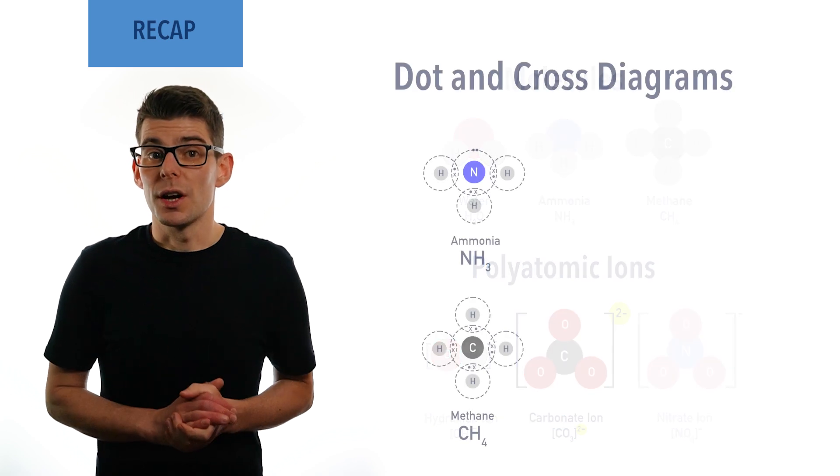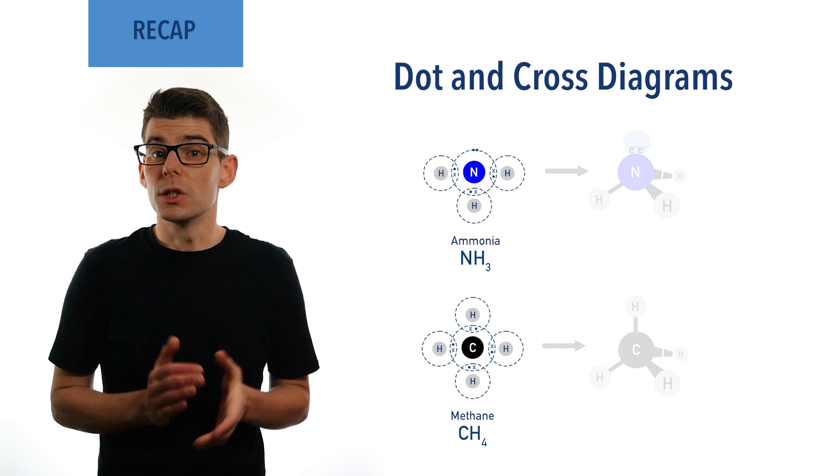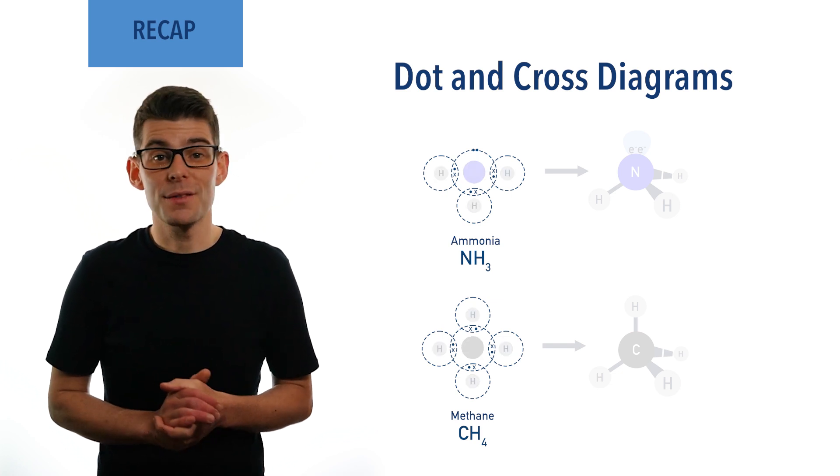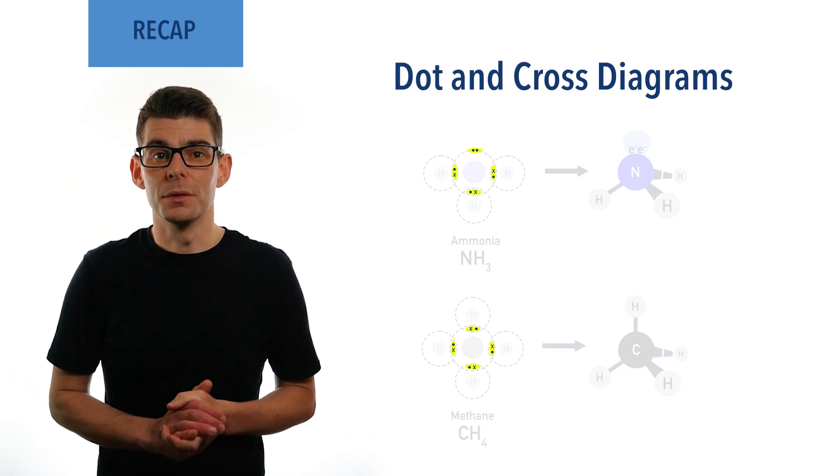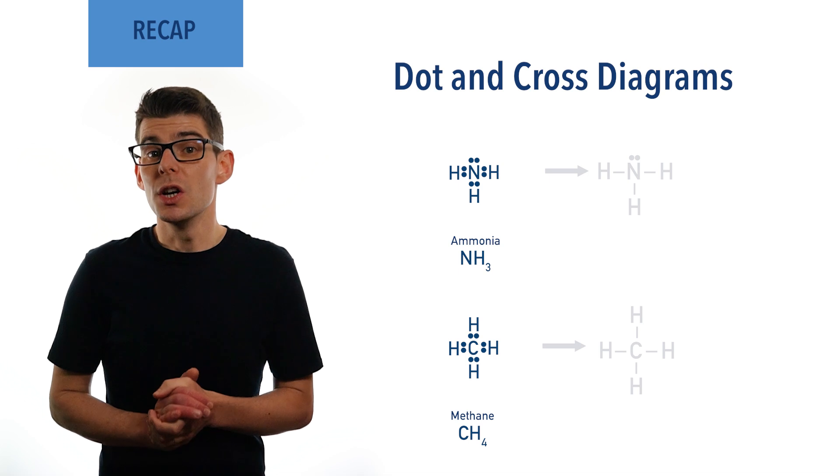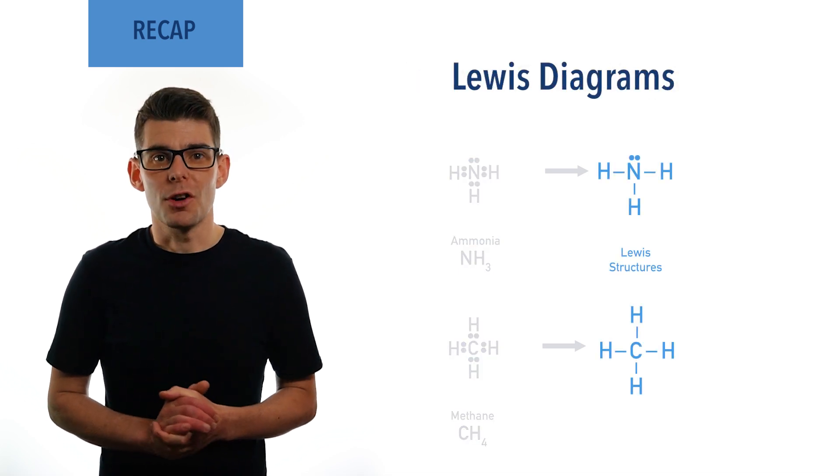Dot and cross diagrams are a way of representing bonding in a molecule or ion, using dots and crosses to represent electrons from each atom together. A pair of dots or crosses represents a pair of electrons. If only dots are used, the diagrams are called Lewis diagrams, and the structures they refer to are called Lewis structures. Recap done? Let's go!